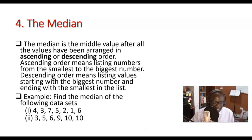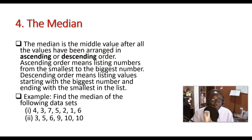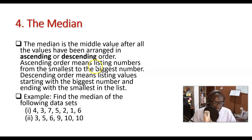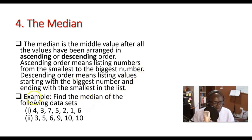Now let us look at the last measure: the median. The median is the middle value after all the values have been arranged in ascending or descending order. Ascending order means listing numbers from the smallest to the biggest; descending order means starting from the biggest and ending with the smallest.